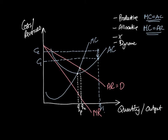Dynamic efficiency is slightly different — it refers to changes in efficiency over time. Dynamic efficiency is shown as a reduction in average cost over time, meaning the average cost curve shifts down. Because it is about change over time, it is normally shown using the long-run average cost curve rather than the short-run diagram we've been using.